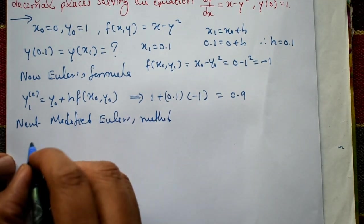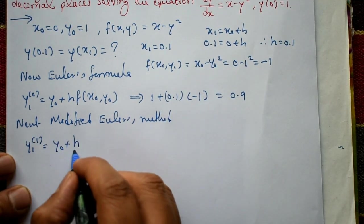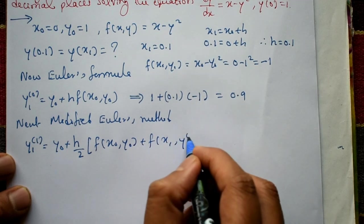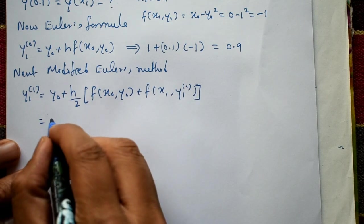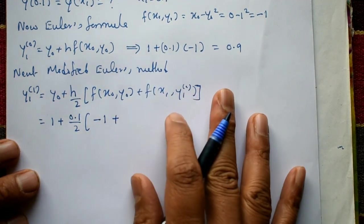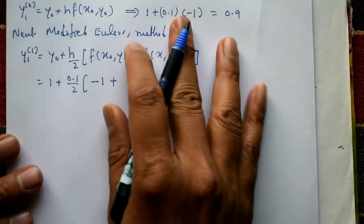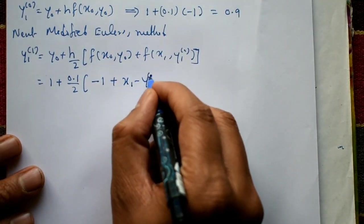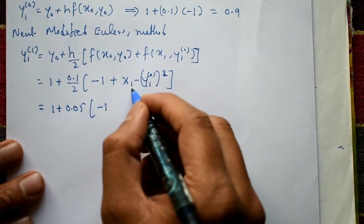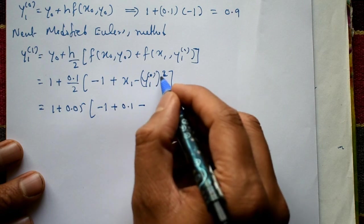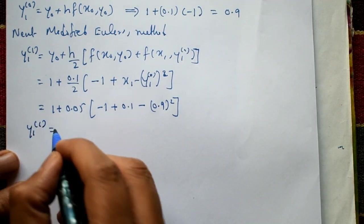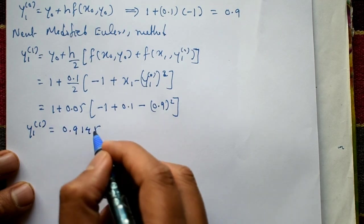Now applying the modified Euler corrector formula: y1¹ = y₀ + (h/2)·[f(x₀, y₀) + f(x₁, y1⁰)]. Substituting: 1 + (0.1/2)·[-1 + f(0.1, 0.9)] = 1 + 0.05·[-1 + (0.1 - 0.9²)] = 1 + 0.05·[-1 + (0.1 - 0.81)]. Using a calculator, y1¹ = 0.9145.